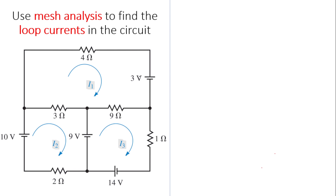For the batteries, the positive polarity is the long terminal. So for each battery: this one is plus and this one is minus. This one is plus and this one is minus. This one is plus and this one is minus.